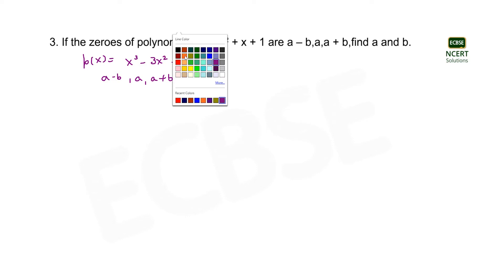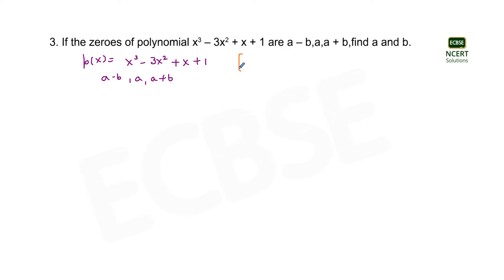Let us write the polynomial given in this question in the basic form, that is ax³ + bx² + cx + d. This will make it easy for us to compare with the given polynomial and find the value of the coefficients a, b, c, and d.